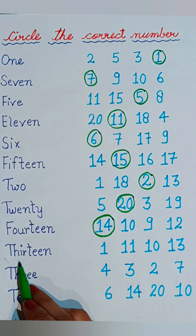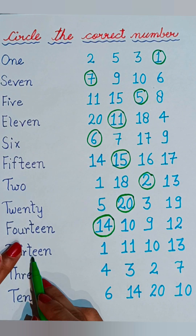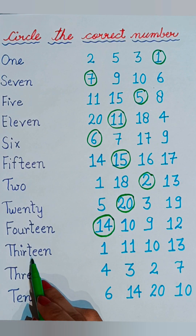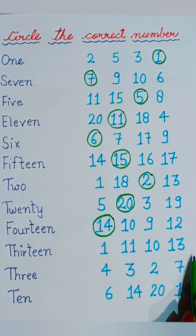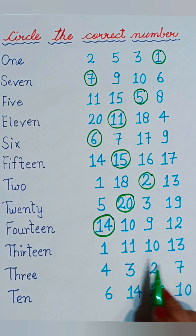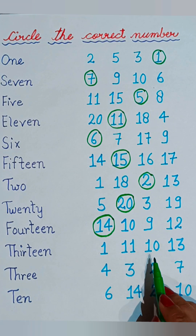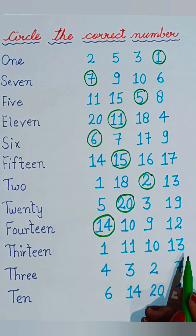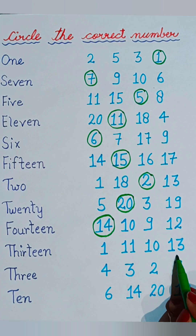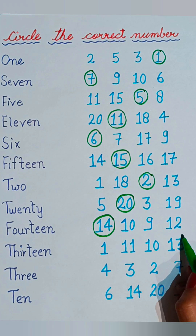T-H-I-R-T-E-E-N, thirteen. You have to circle the number thirteen. This is the correct one.